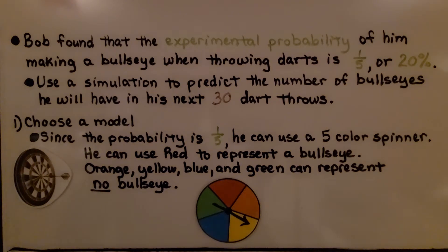Bob found that the experimental probability of him making a bullseye when throwing darts is one-fifth or twenty percent. Use a simulation to predict the number of bullseyes he will have in his next thirty dart throws. So the first thing we do is choose a model. And since the probability is one-fifth, he can use a five-color spinner.